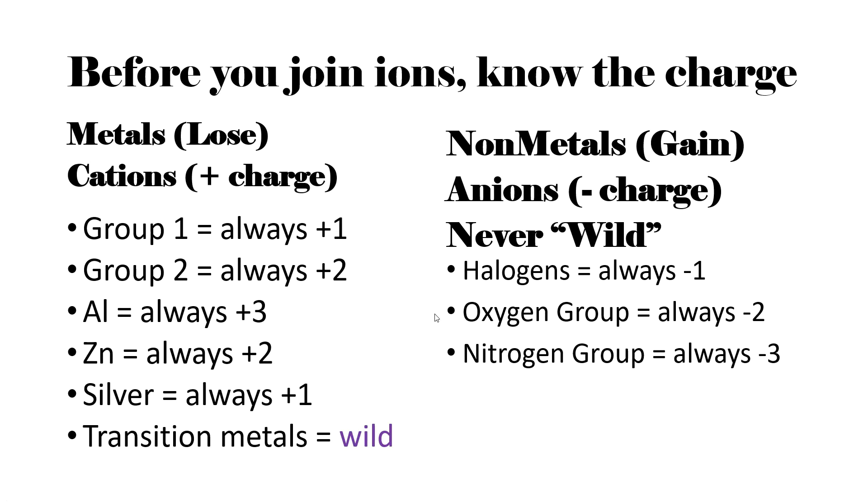Okay. So when you join ions, you have to know what the charge is. This is because the total charge has to be zero when you're done with ionic bonding. Metals will lose electrons, become cations, which have a positive charge. Nonmetals will gain electrons. They fight. Remember, nonmetals like fighting. They like to get those electrons. Anions will have a negative charge. They're never wild. There's never any question what's happening with anions. Halogens are always minus one. The oxygen group is always minus two. The nitrogen group is always minus three.